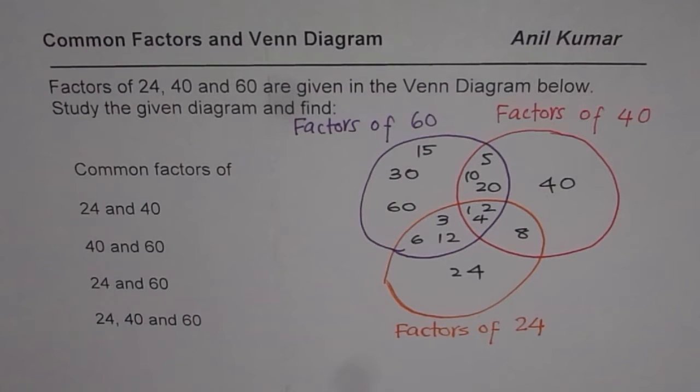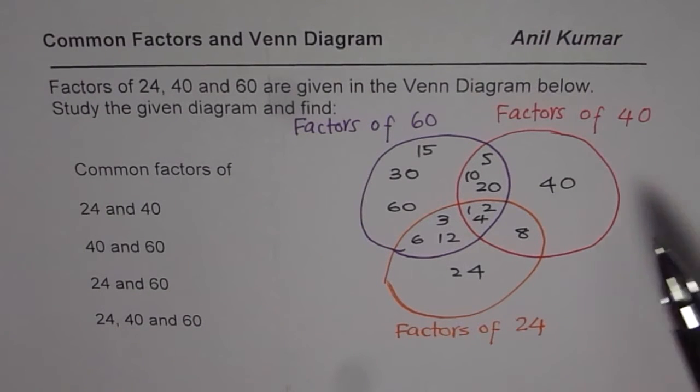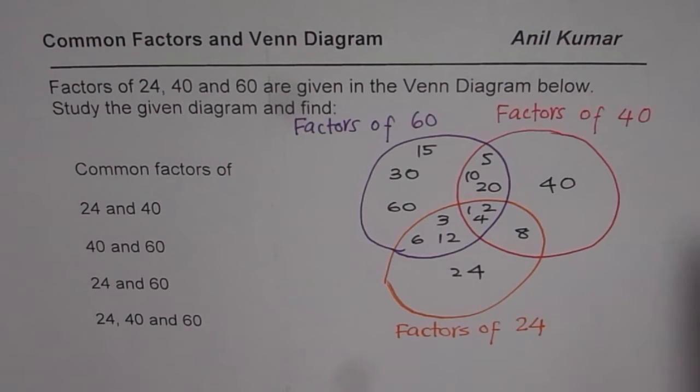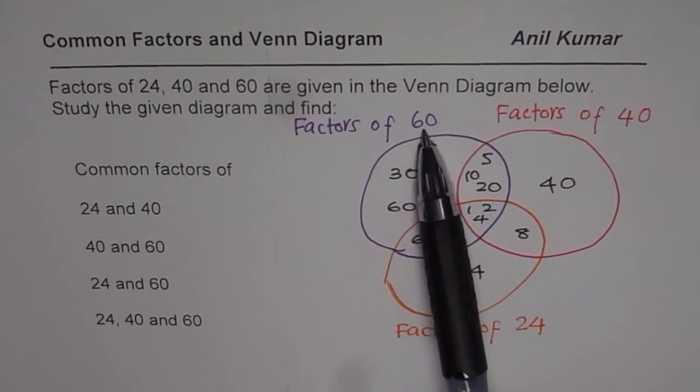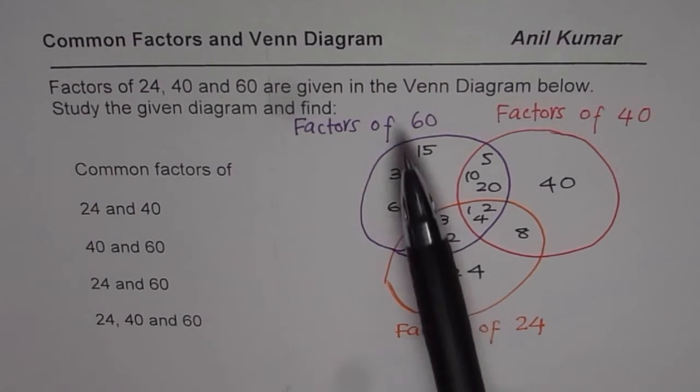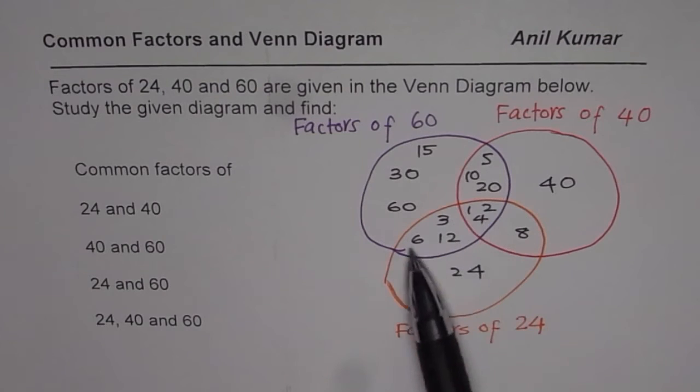You can now pause the video and write down the common factors of these groups. There are four different groups here. Groups could be between 60 and 40, between 40 and 24, 24 and 60, and all of them together.